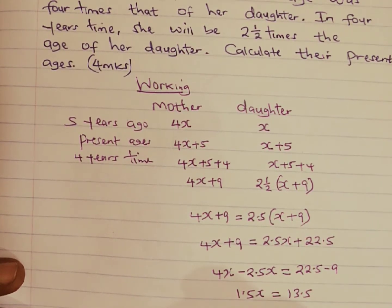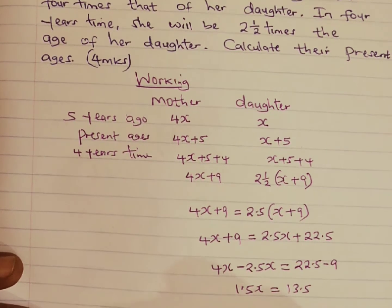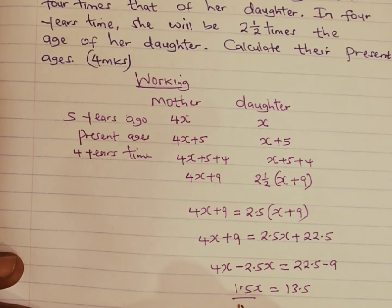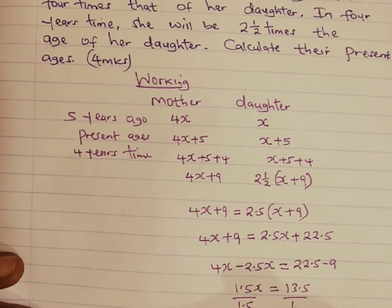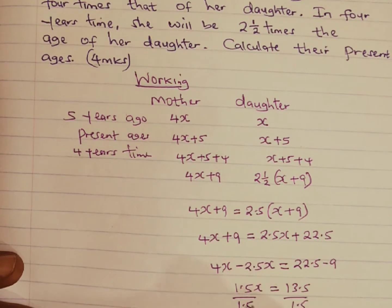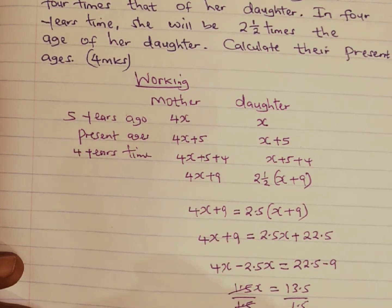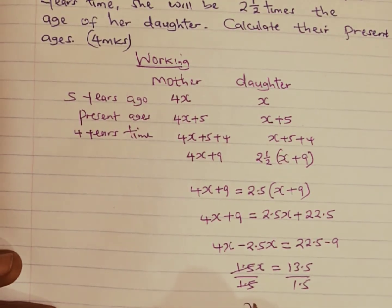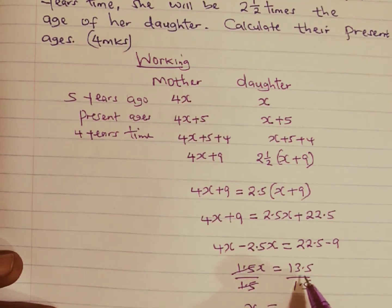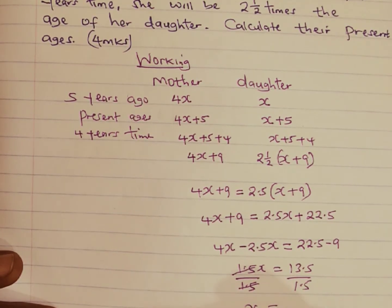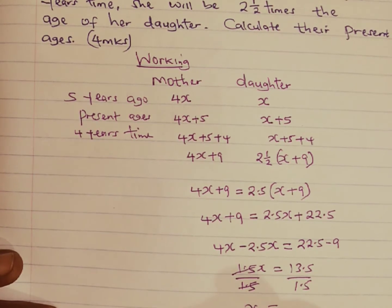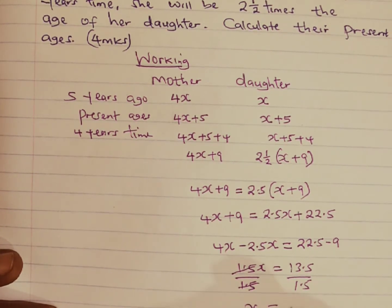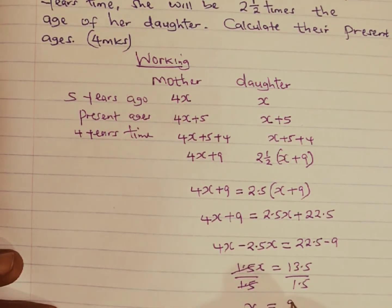To get the value of X, we divide both sides by one point five, where one point five and one point five cancel to give us X. Our X is going to be equal to thirteen point five divided by one point five, which gives us nine.